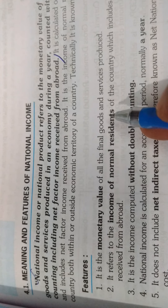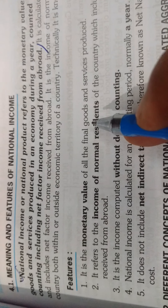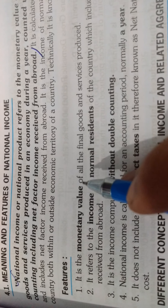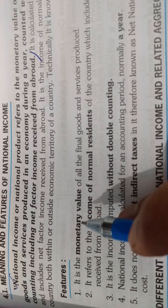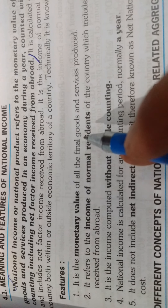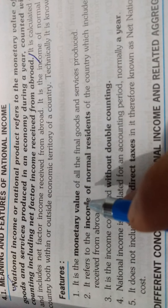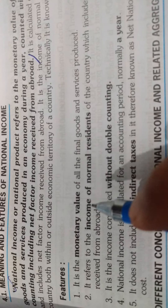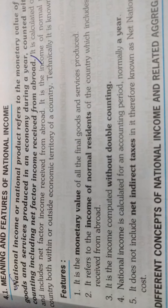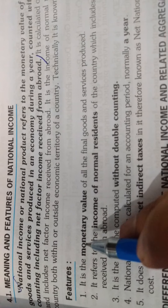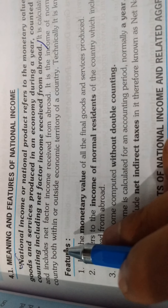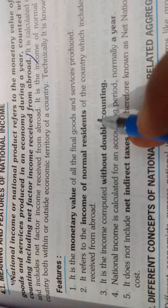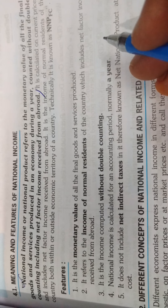As long as the production is in one financial year, they all get the monetary value. The financial year runs from 1st April, and it includes the monetary value and net factor income.